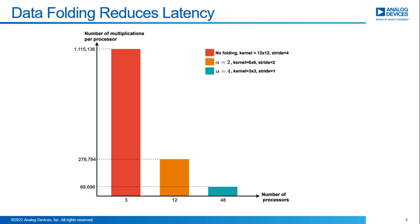Here is a figure showing the number of multiplications per processor before and after the data folding operation. Since we have employed more processors for the same load, we significantly decreased the number of MACs per active processor.